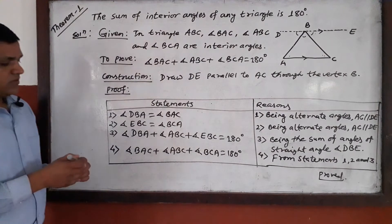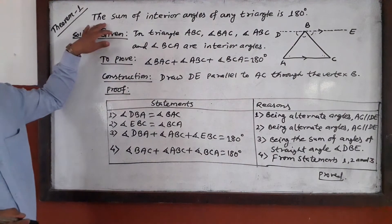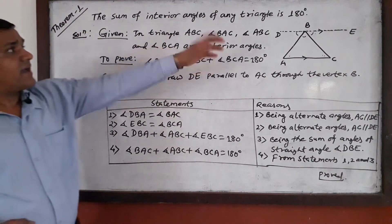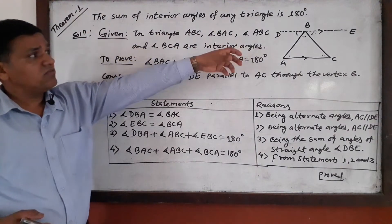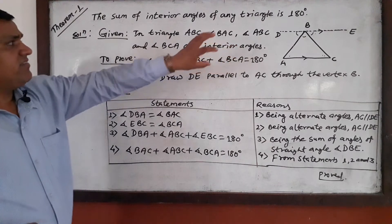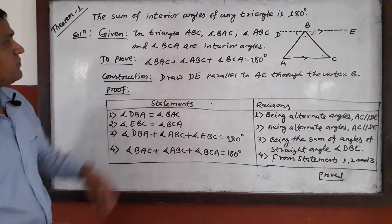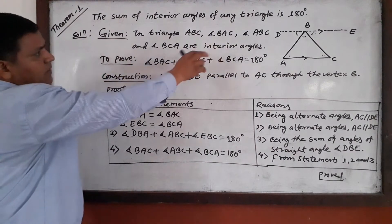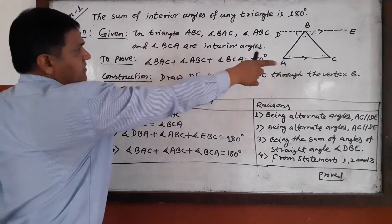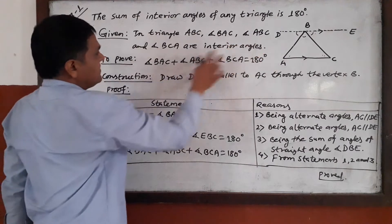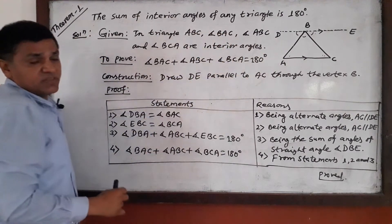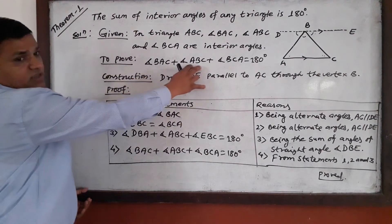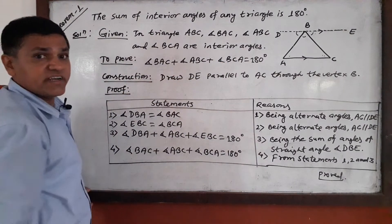We demonstrate the same statement as shown: in triangle ABC, to prove angle BAC plus angle ABC plus angle BCA equals 180 degrees.